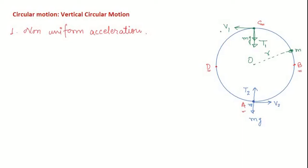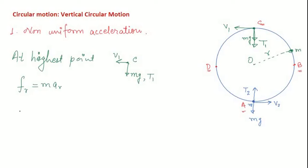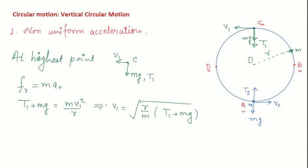Let us consider the highest and lowest points to find the minimum speed required for circular motion. At the highest point C, two forces act: mg and T1, and the velocity is V1. Writing the radial equation of motion: radial force equals mass times radial acceleration, so T1 plus mg equals m·V1²/r. From this, V1 equals the square root of r(T1 + mg)/m.